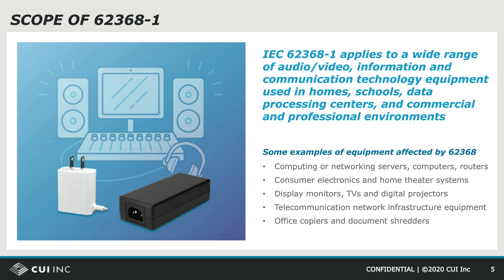62368 applies to a broad range of ICT — that is, information and communication technology equipment — as well as audio-video equipment. You will find these in the home environment in the form of televisions, home theater, computers, monitors, routers, and other similar equipment. 62368 also applies to equipment found in schools, offices, and classrooms in the form of digital projectors, computers, monitors, routers, and other similar equipment.